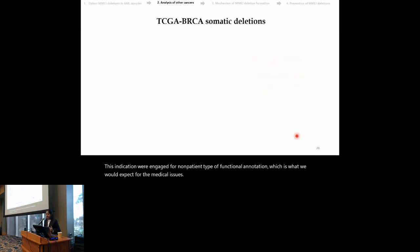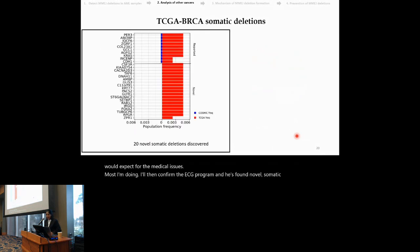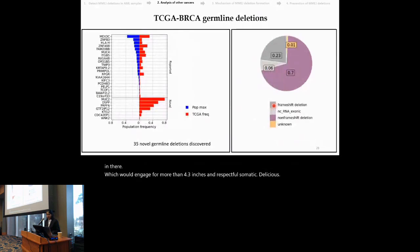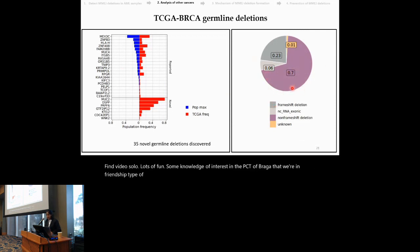We also analyzed another cancer cohort, which is the TCGA-BRCA, and we found novel somatic deletions in there, which were enriched for frameshift deletions, as we would expect for somatic deletions. Finally, we also found some novel germline deletions in the TCGA-BRCA that were enriched in non-frameshift type of functional annotations.